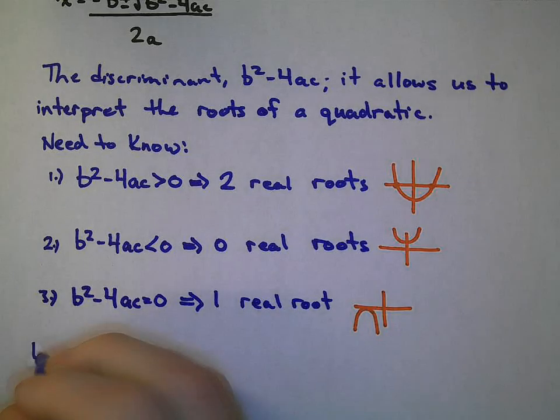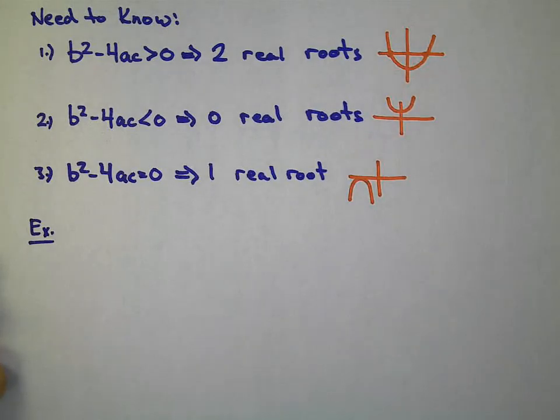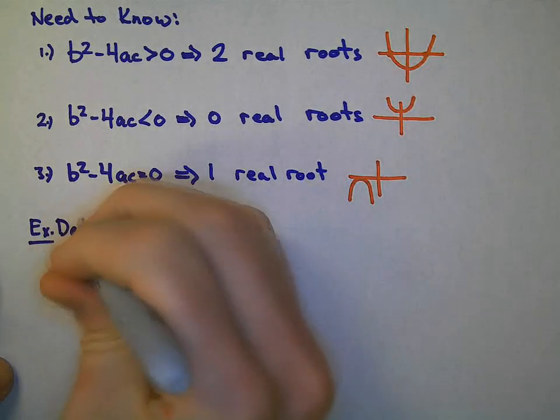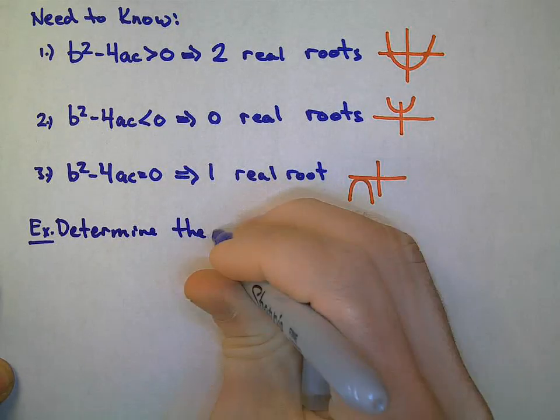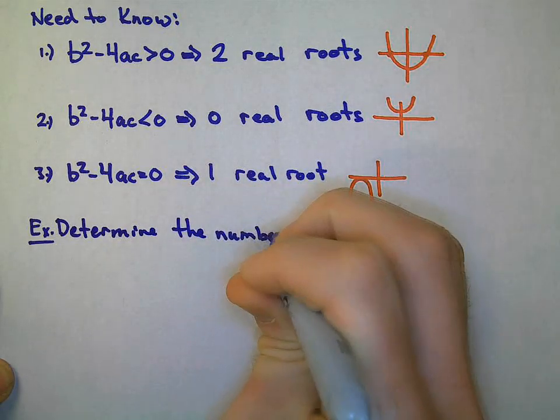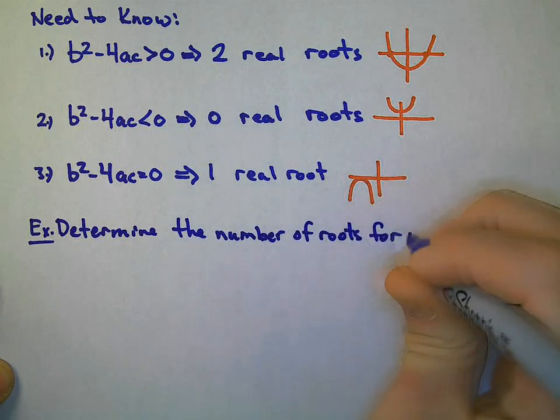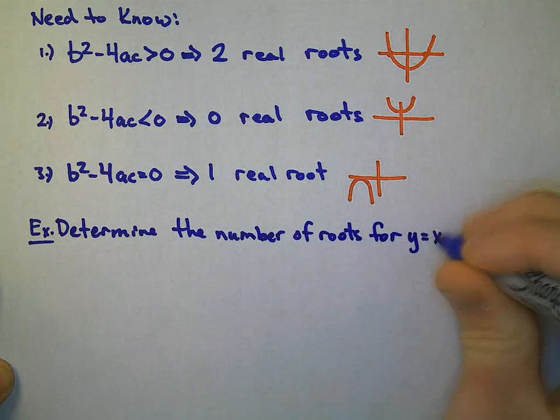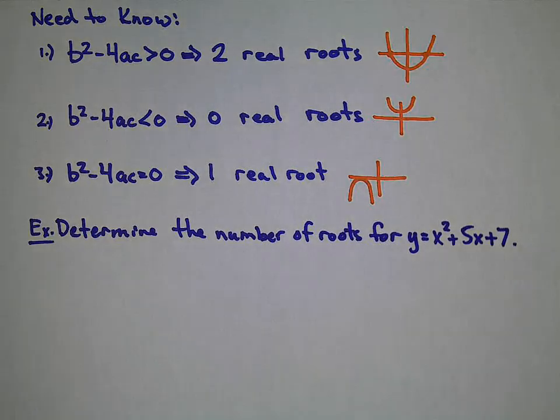So let's do an example here. And this is the generic type of question you'll always be asked if you're dealing with a discriminant. Determine the number of roots for, let's say, y equals x squared plus 5x plus 7. I'm not actually asking you to determine the roots. I'm asking you to tell me how many roots.